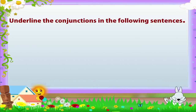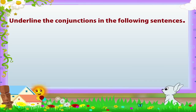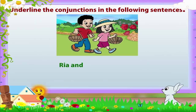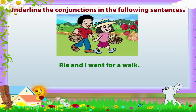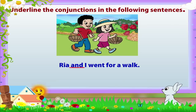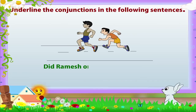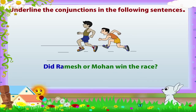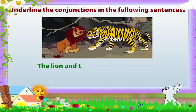Now let us do an activity together — underline the conjunctions in the following sentences. 'Ria and I went for a walk' — the conjunction is 'and.' 'Did Ramesh or Mohan win the race?' — the conjunction is 'or.'